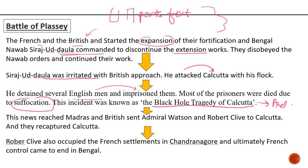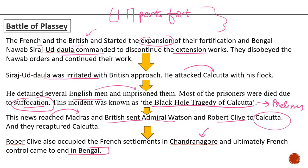The Black Hole Tragedy of Calcutta is extremely important for prelims and is directly related to the Battle of Plassey. The news that English soldiers were dying due to suffocation reached Madras, and the Britishers sent Admiral Watson and Robert Clive to Calcutta. They recaptured Calcutta and regained their control over it. Robert Clive also occupied the French settlements in Chandernagore, and ultimately French control came to an end in the Bengal area.